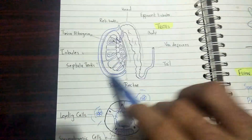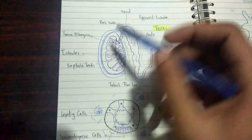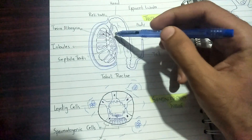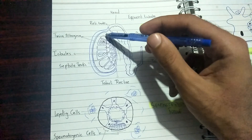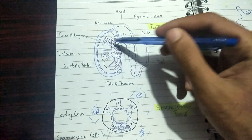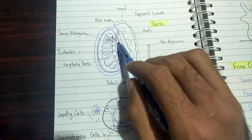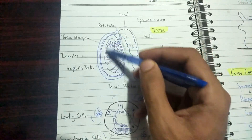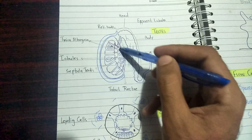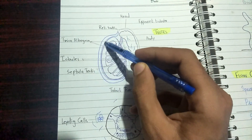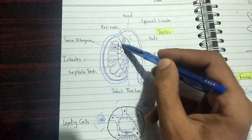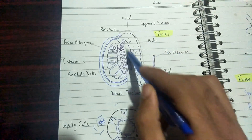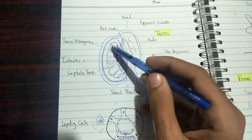First, we are going to study the system inside the testes. As you can see, this is a somewhat oval structure known as testes. This oval structure is filled with a number of lobules and a network of tubules. This whole parenchyma is covered by a thick connective tissue layer known as tunica albuginea, which is the outermost covering of the testes.